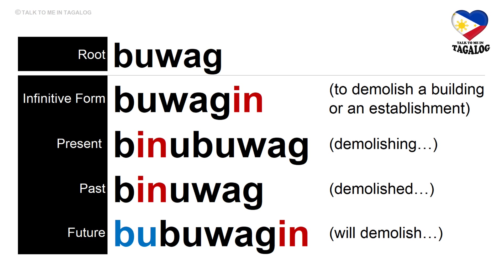Root word: buwag — meaning to demolish a building or an establishment. Infinitive form: buwagin. Present tense: binubuwag — demolishing a building. Past tense: binuwag — demolished. Future tense: bubuwagin — will demolish.